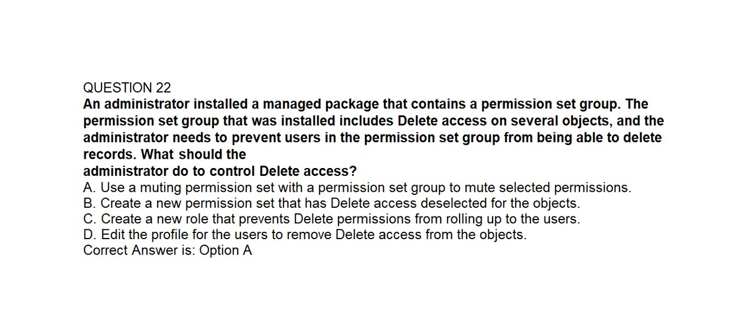Option A: use a muting permission set with a permission set group to mute selected permissions. Option B: create a new permission set that has delete access deselected for the objects. Option C: create a new role that prevents delete permissions from rolling up to the users. Option D: edit the profile for the users to remove delete access from the objects.